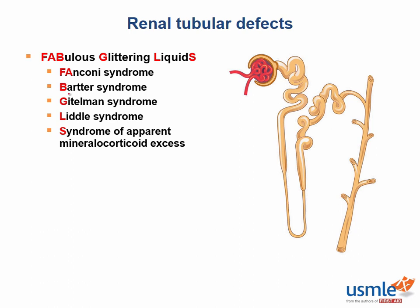Bartter syndrome is a reabsorption defect in the thick ascending limb of the loop of Henle. It's an autosomal recessive mutation in the sodium potassium chloride cotransporter. It results in hypokalemia and metabolic alkalosis, similar to what you would see with use of a loop diuretic. Therefore, chronic loop diuretic use and Bartter syndrome present similarly.